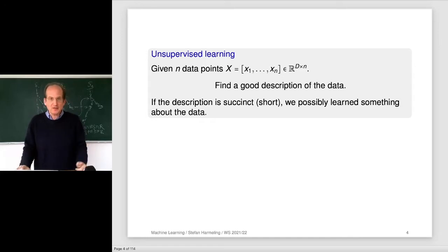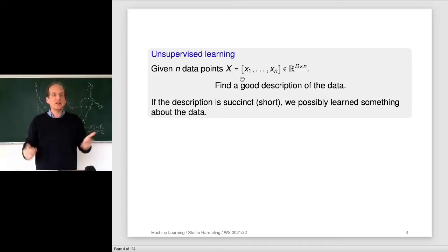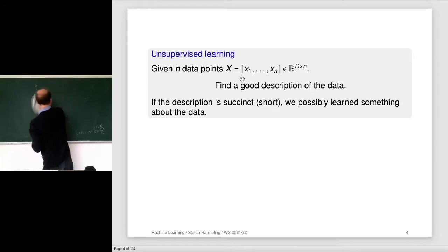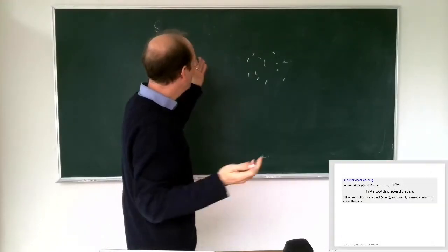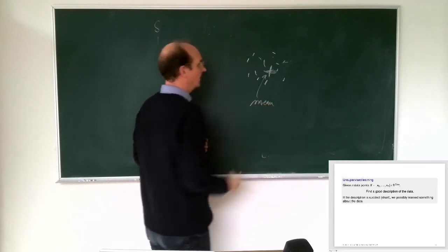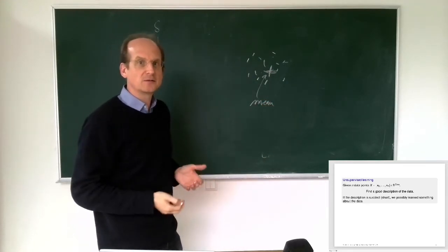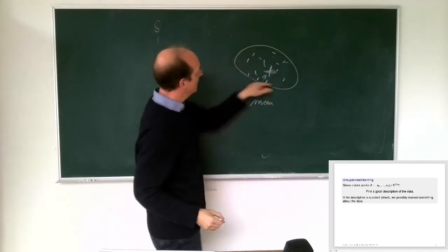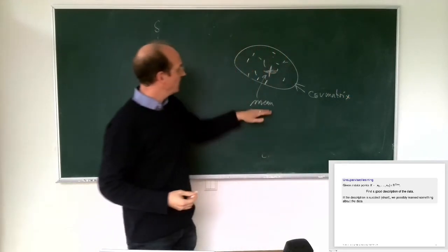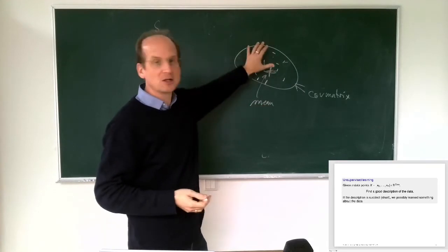So what is unsupervised learning? In unsupervised learning we only have inputs — we have a data set x1 to xn, just a point cloud in space, and the individual points don't have a label like class 1, 2, or 3. Given a point cloud, a very good first description is to ask: what is the mean? That gives us the location of the data. A second description is about the spread — how is it spread out? We might get an ellipse, which is the covariance matrix of the data.